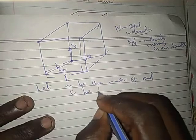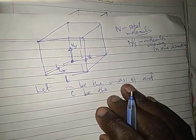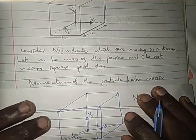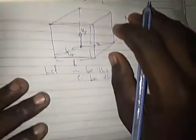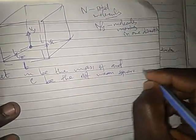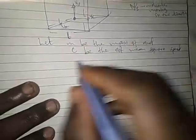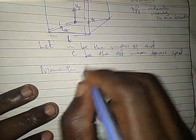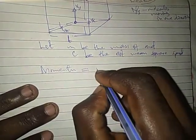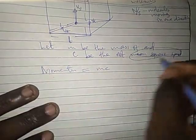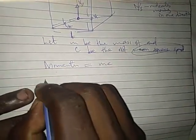And let M be the mass of the particle, and C be the velocity or root mean square speed. So now, momentum of the particle, momentum before collision with the wall of the container will be equal to MC. That's momentum, because momentum is equal to mass M times velocity C. This root mean square speed is the velocity.